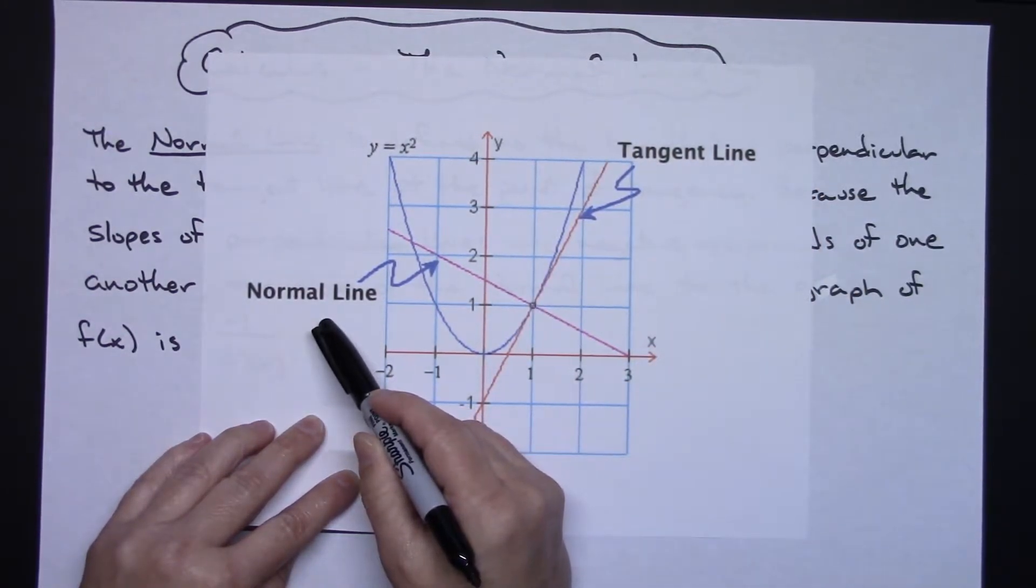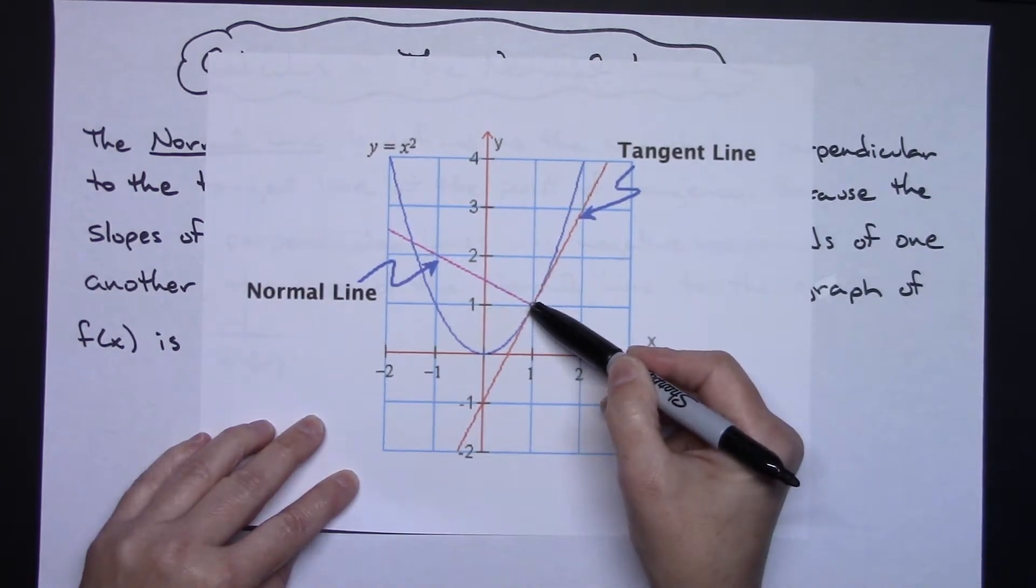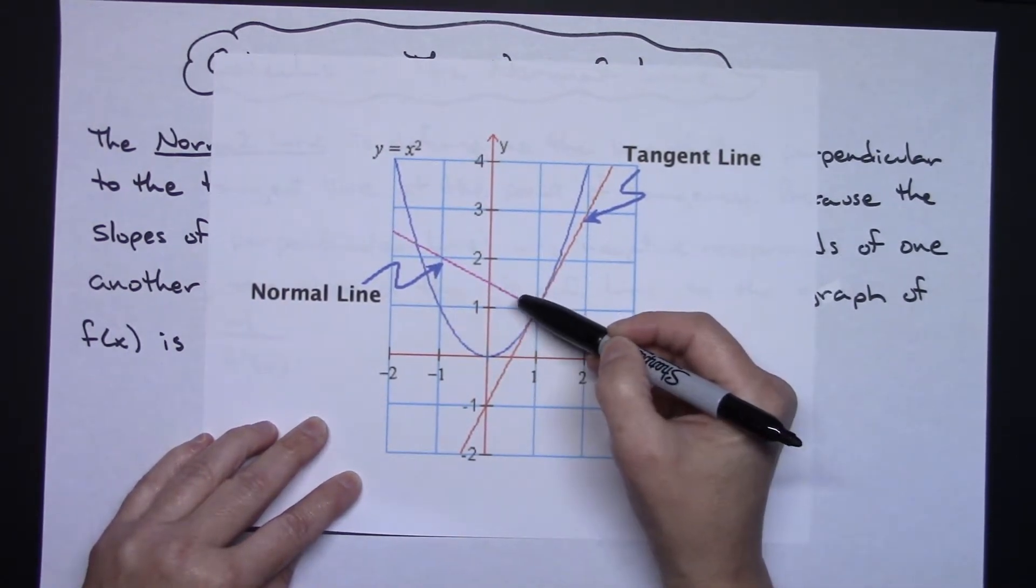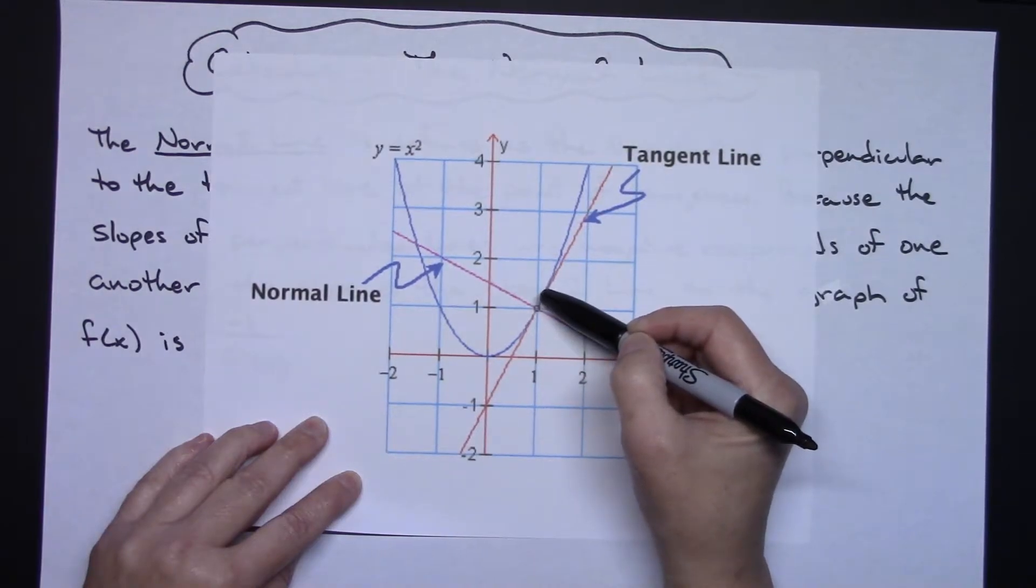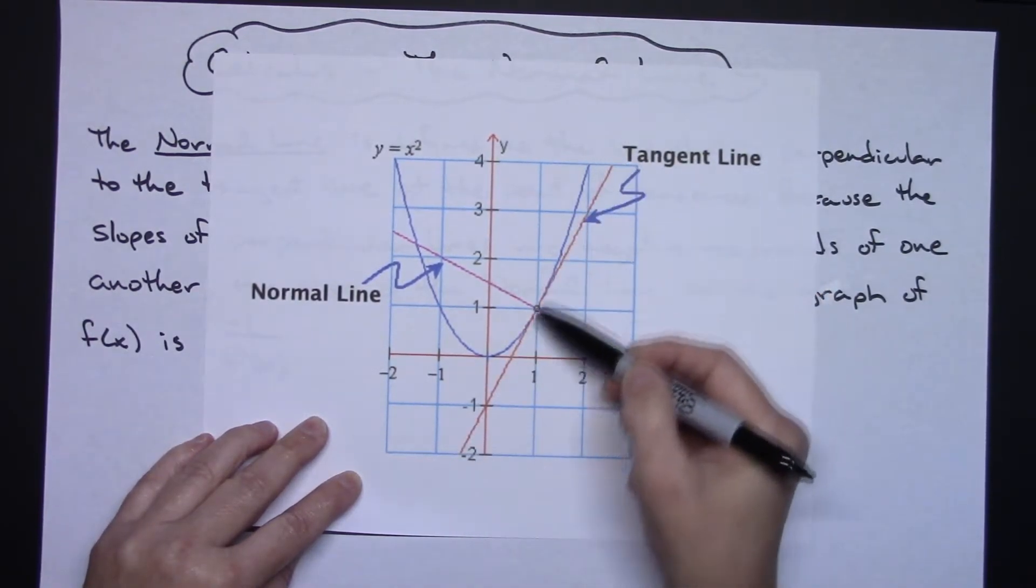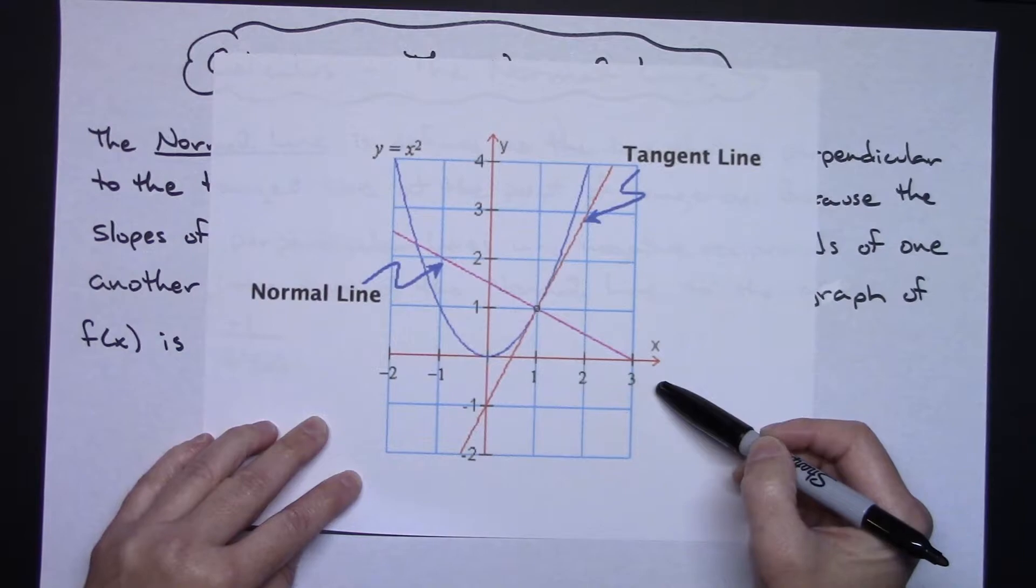My normal line is going to go through that point of tangency right there, and it will form a right angle, or be perpendicular, to the tangent line. So the tangent line and the normal line are perpendicular to one another.